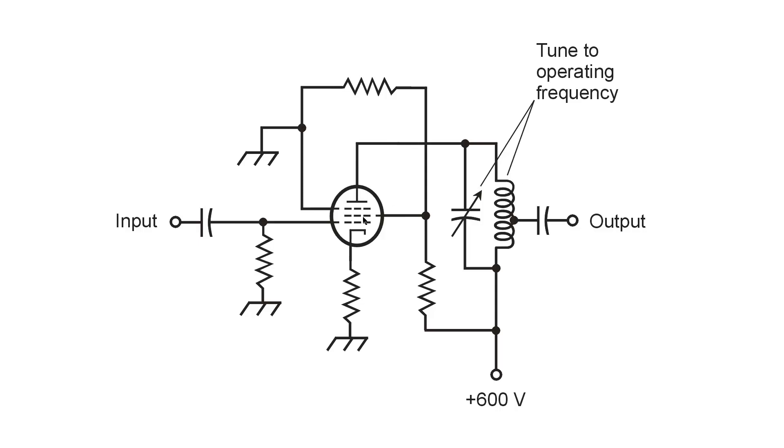The screen grid, therefore, where do you connect it? To a positive voltage somewhere between zero or ground potential and the plus 600 or plate voltage. A DC voltage. That's what the screen grid carries. That's where you connect it.